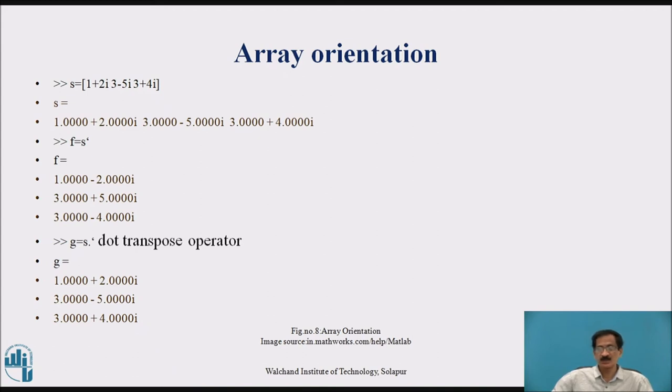Next in the earlier slide we discussed transpose of matrix. Now, we are going to use a dot transpose operator. Dot transpose operator will change the given complex number as j is equal to S dot will give 1 plus 2j, 3 minus 5i, and 3 plus 4i.